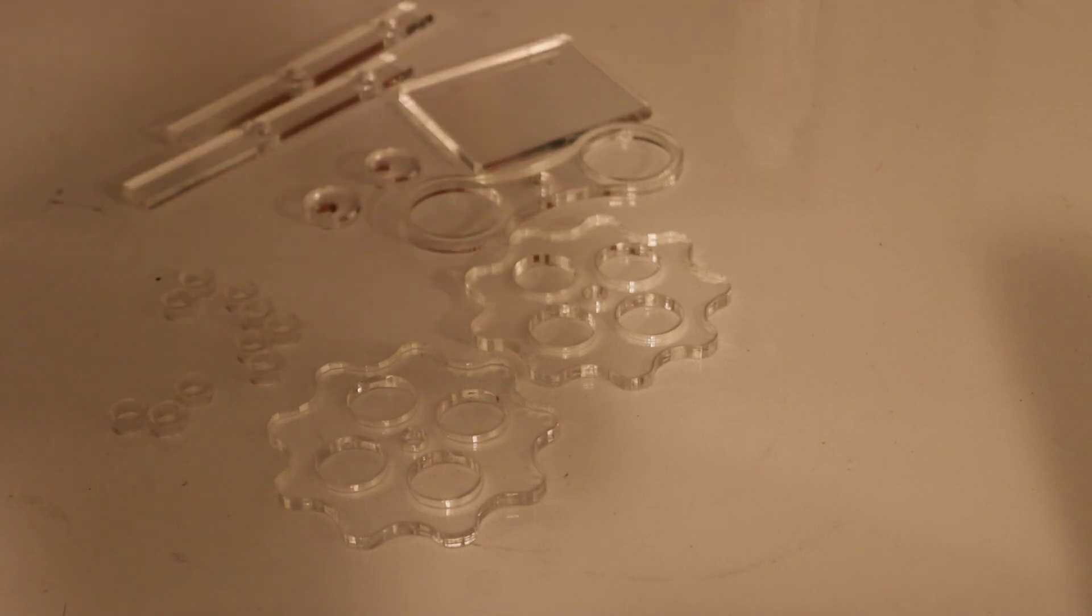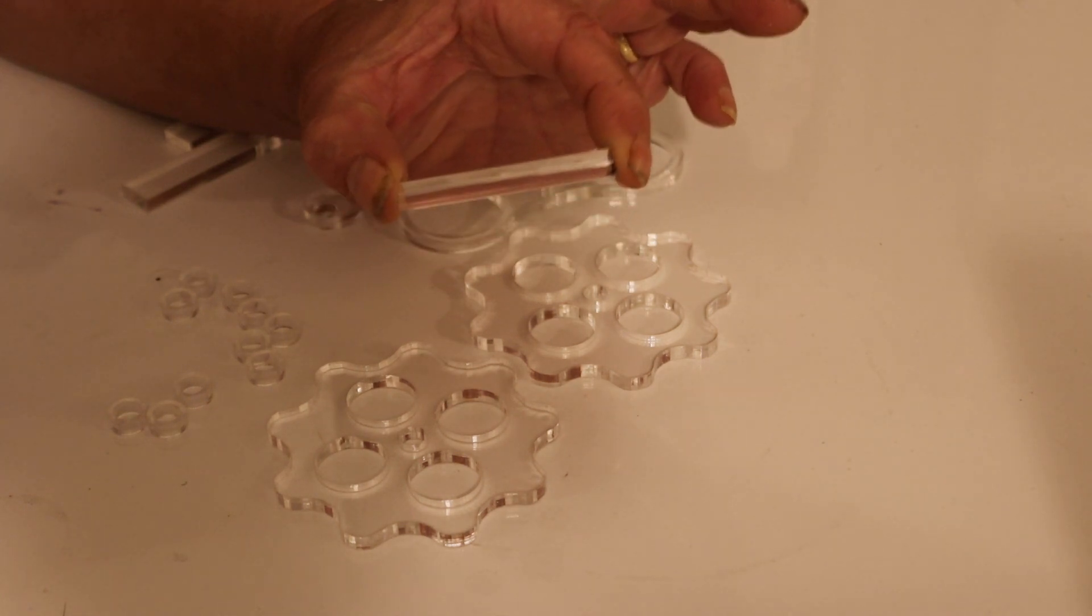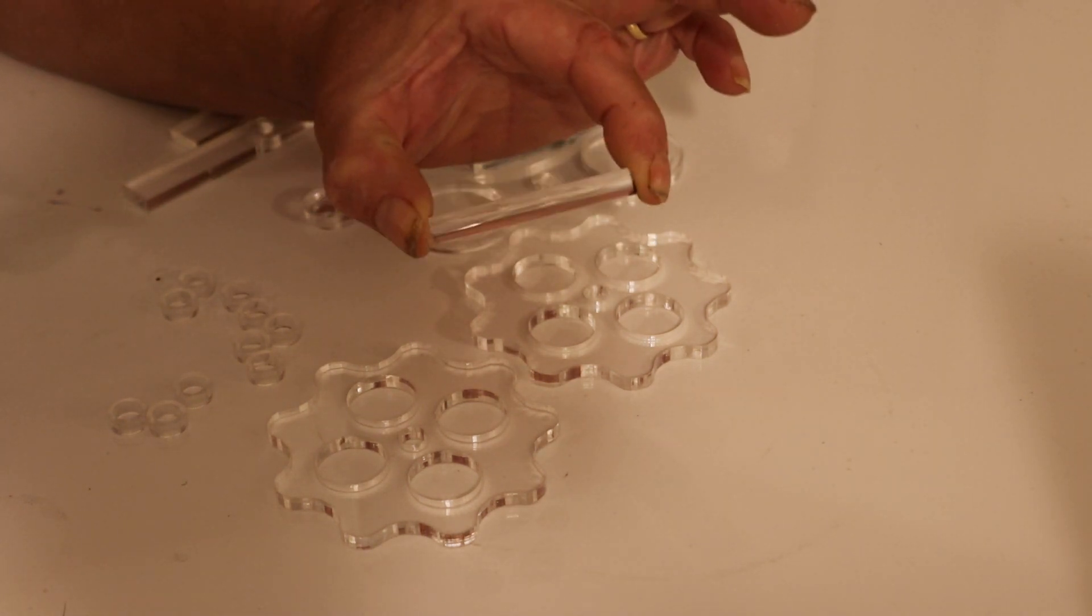So once we've printed them off there are the parts. Now in addition to these parts what we're going to need are two bits of 8mm acrylic bar to act as axles.